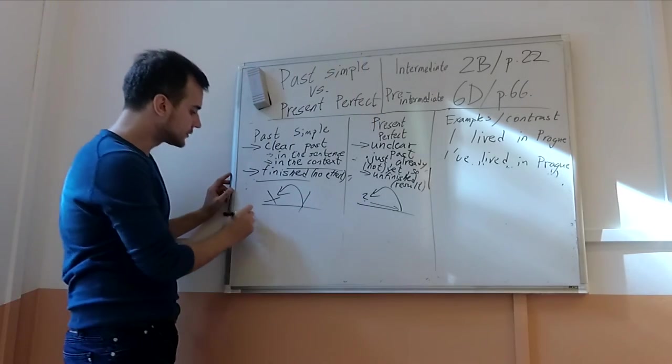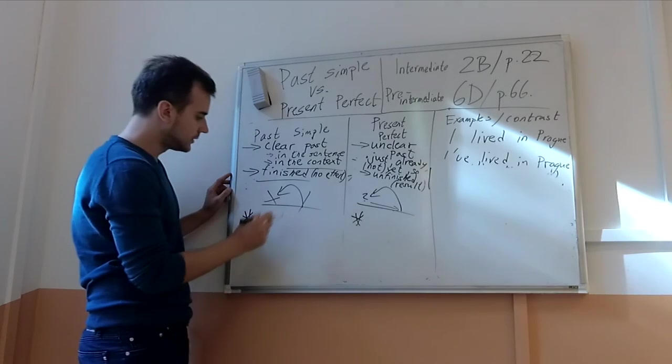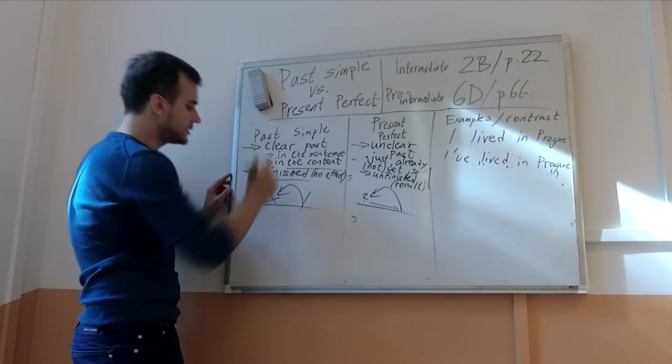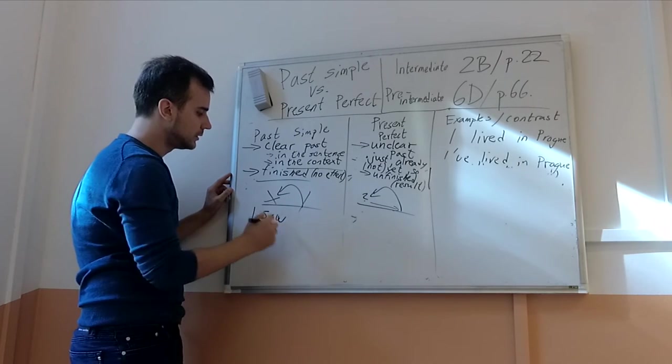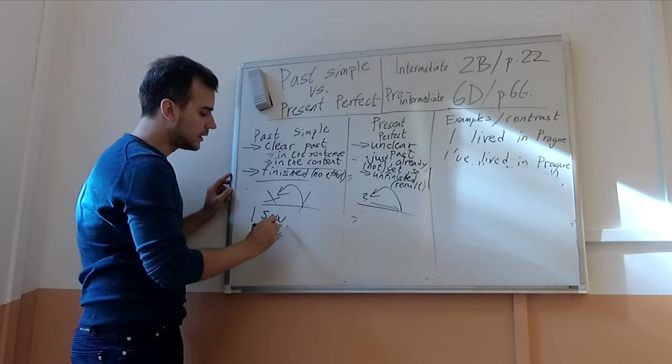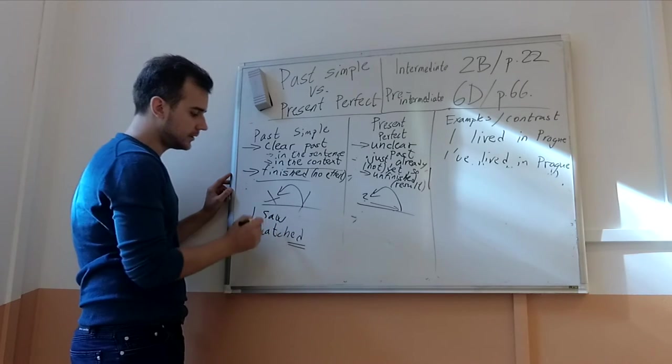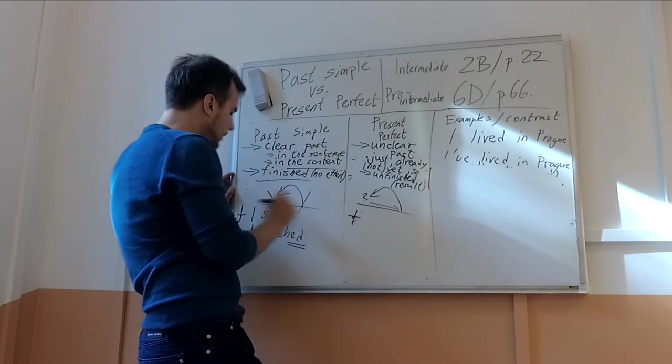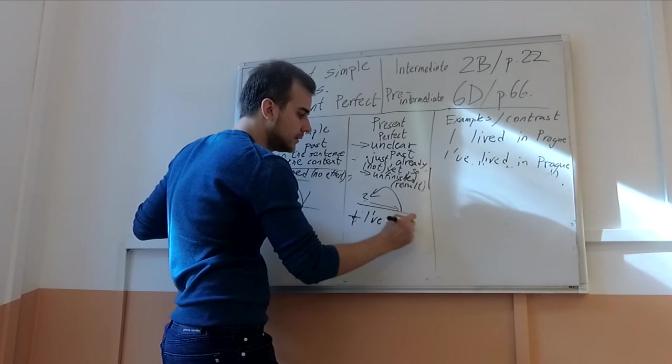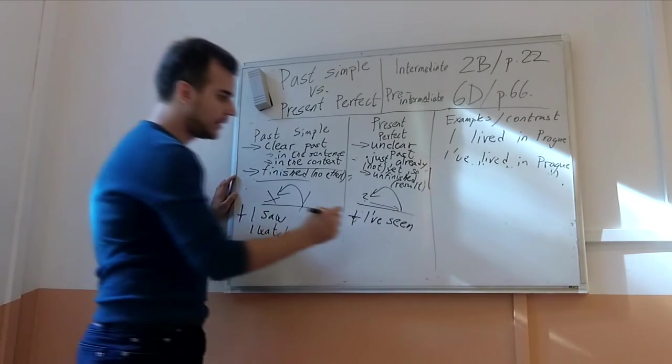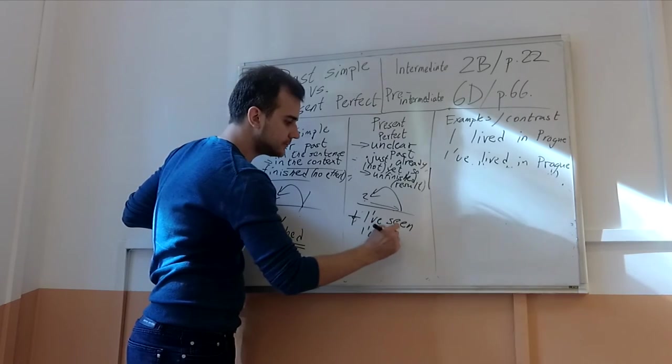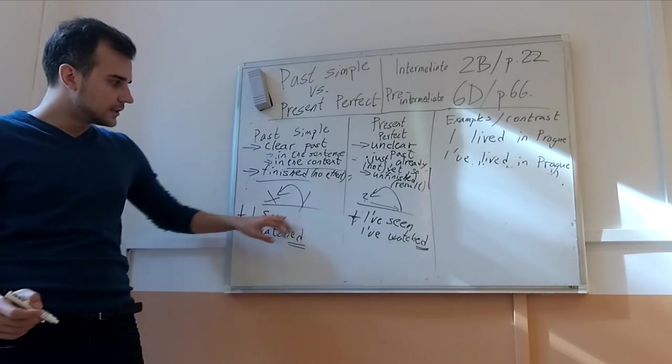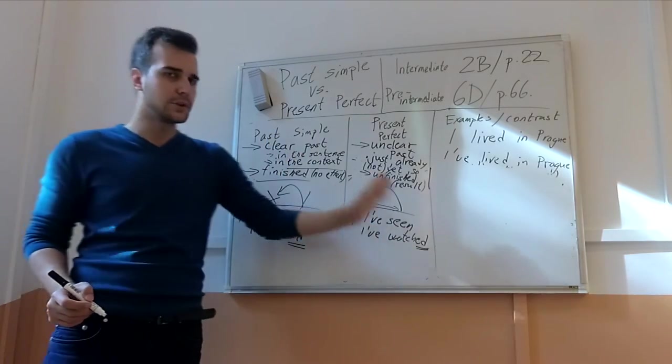Let's have a look at the form. So the positive. First the positive. So I saw or I watched. One of them is regular, the other one I must remember. Then here we have I have seen or I have watched. And again, this one is regular so we just put ED at the end. We must remember the second form or the third form.